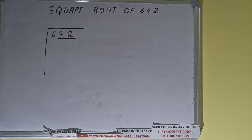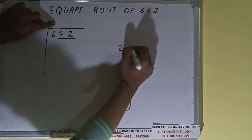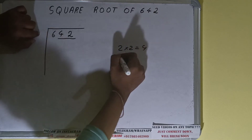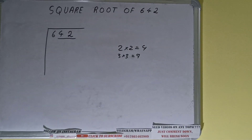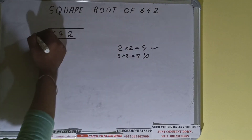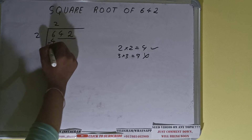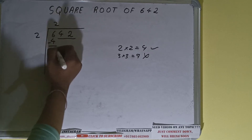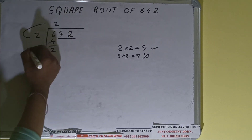The rule is whatever number we write here, we have to write here also. If we write 2 here and 2 here it will give 4. If we write 3 here and 3 here it will give 9. We cannot use 9 because it is greater than 6, so we have to use 4. So 2 here and 2 here will give 4 — subtract it and 2 will be left.